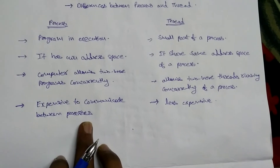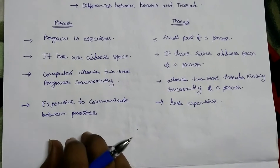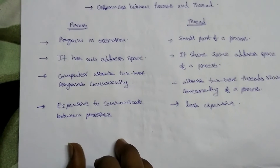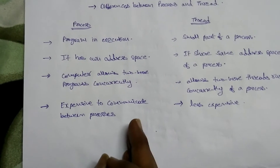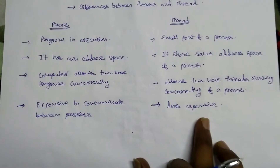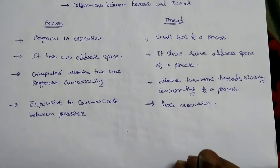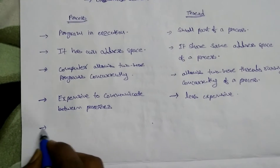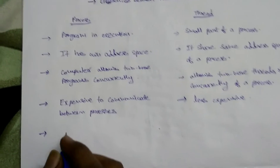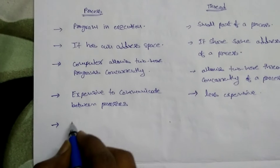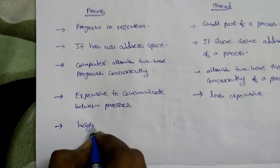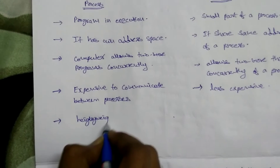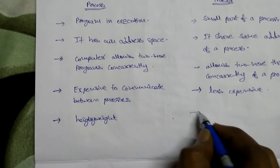The same applies to context switching. If you want to switch from one process to another, you must save every state of the current process in memory before shifting to the other process. For threads, since they share the same address space, context switching between threads of the same process is very easy. This is why a process is called heavyweight — it has a separate address space — while threads are called lightweight.